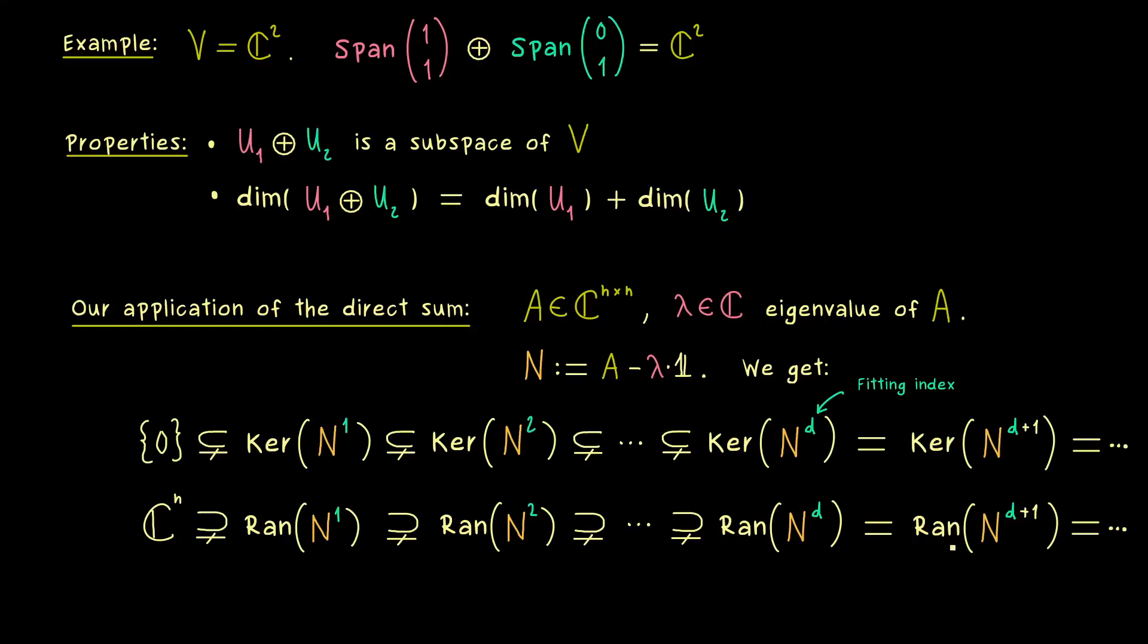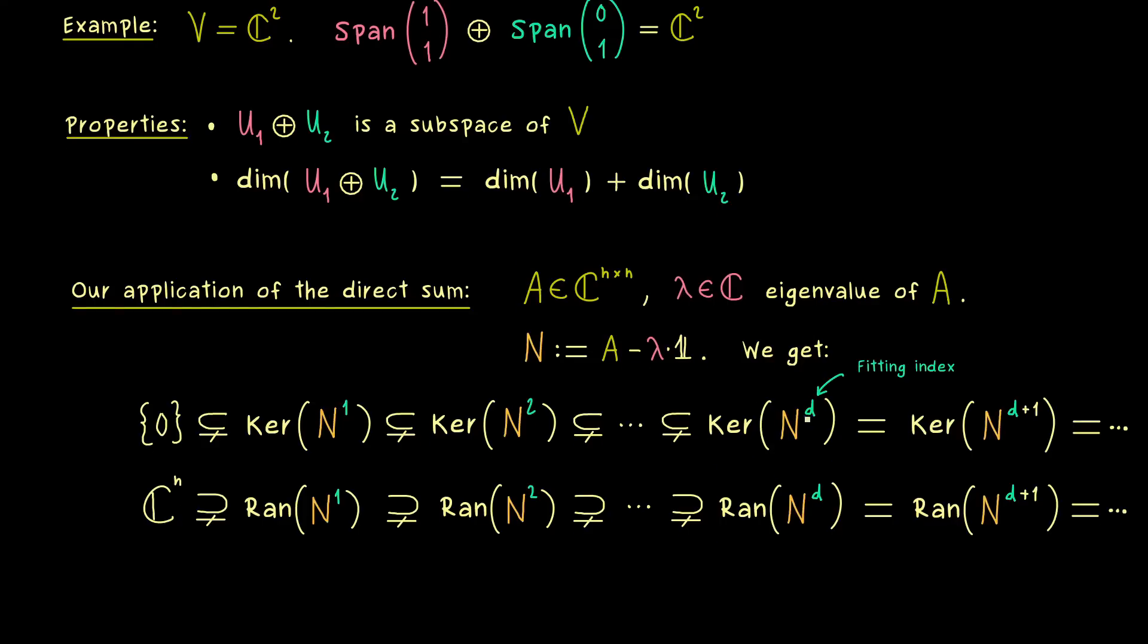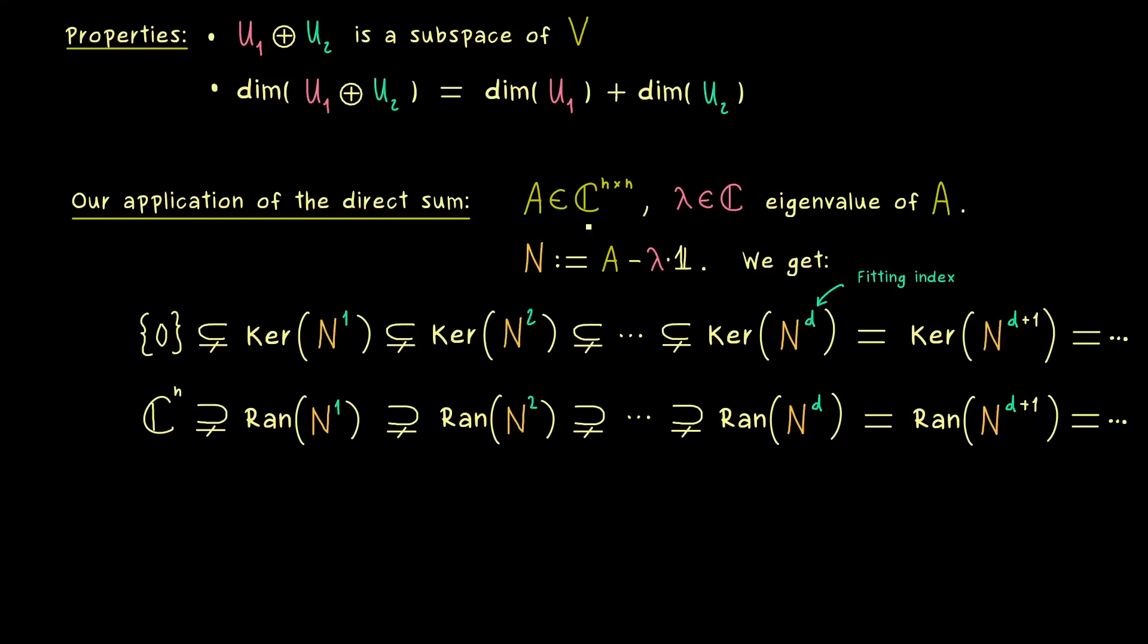And now it turns out that at this level of the fitting index, we can form the direct sum of the kernel and the range. And indeed, this direct sum is actually equal to the whole vector space C^n.